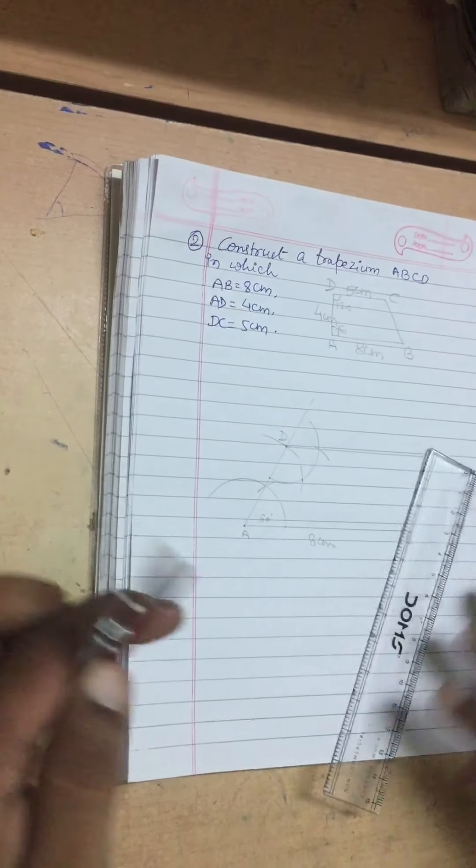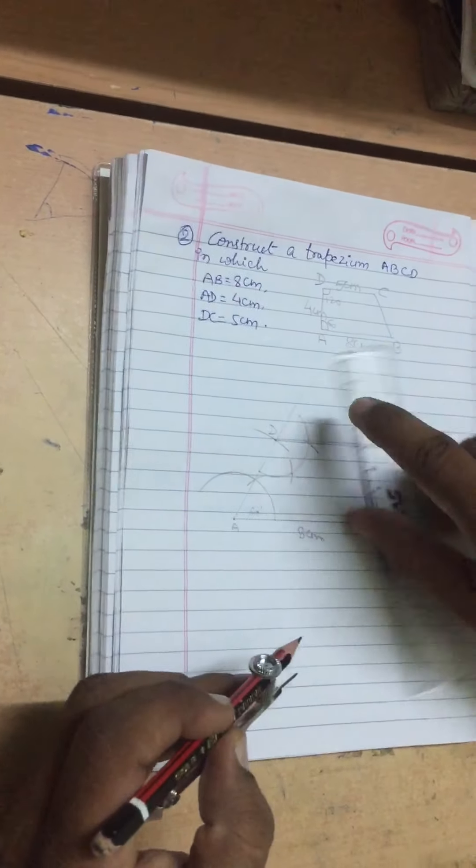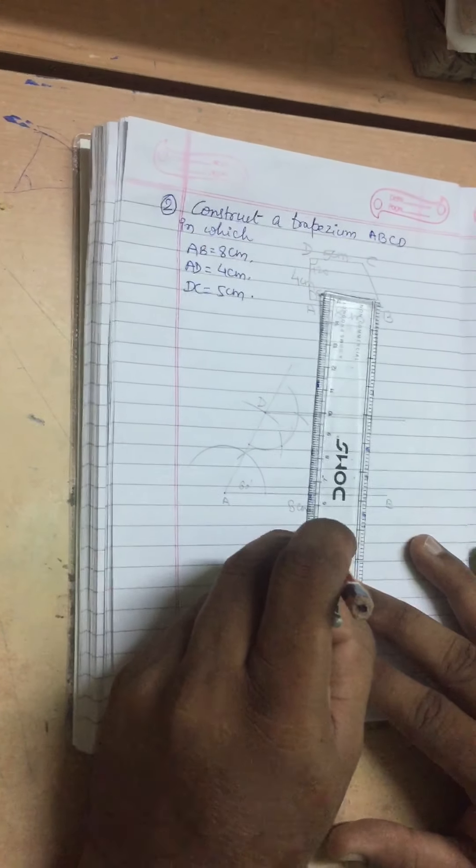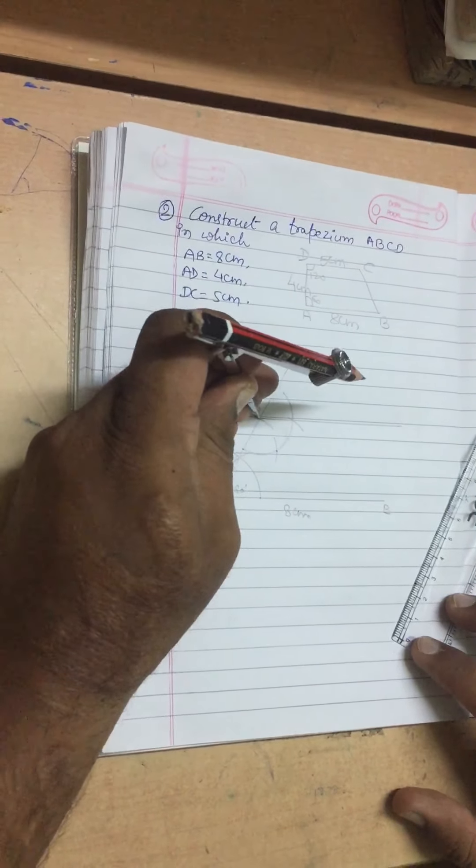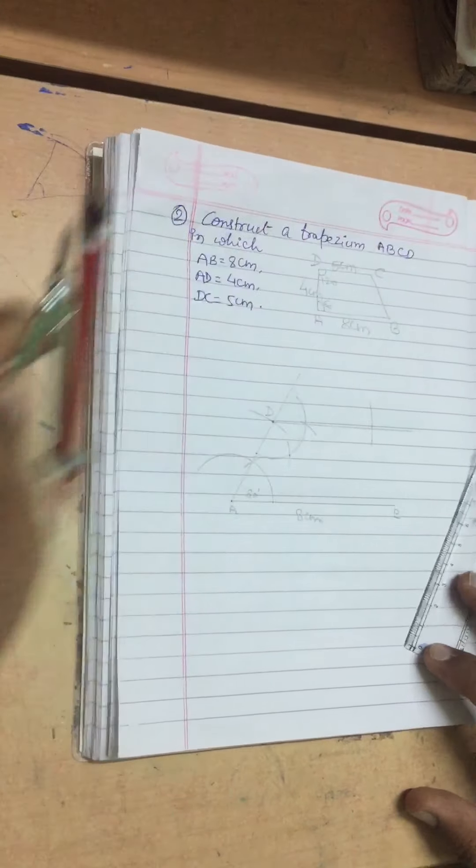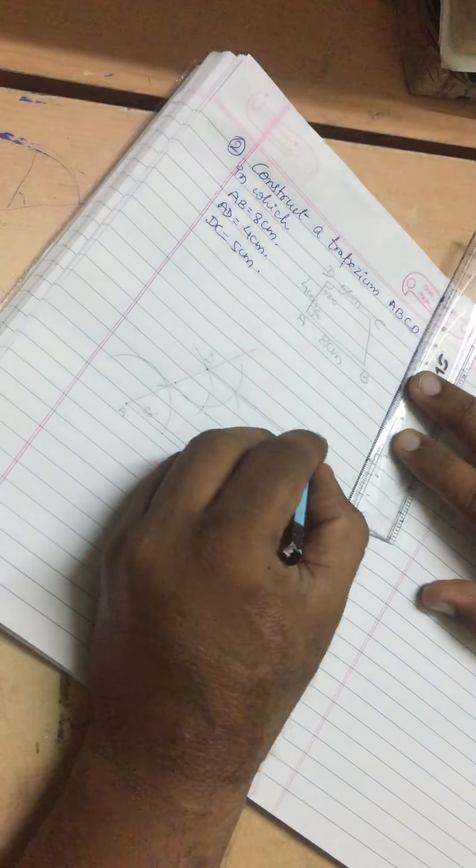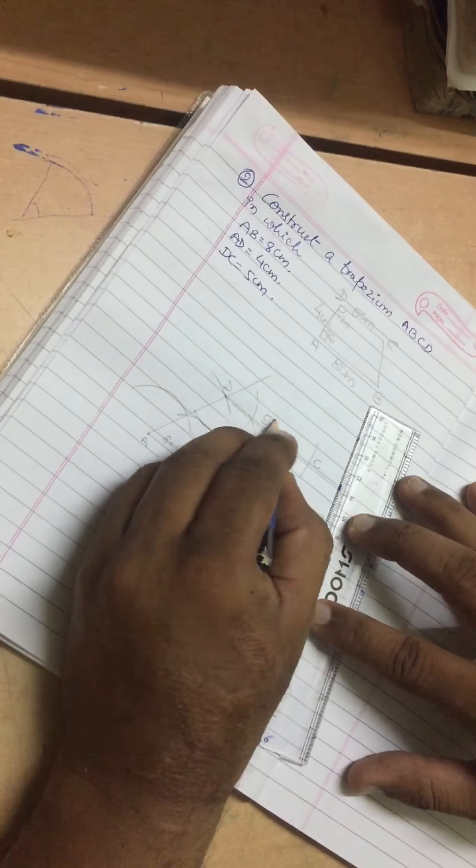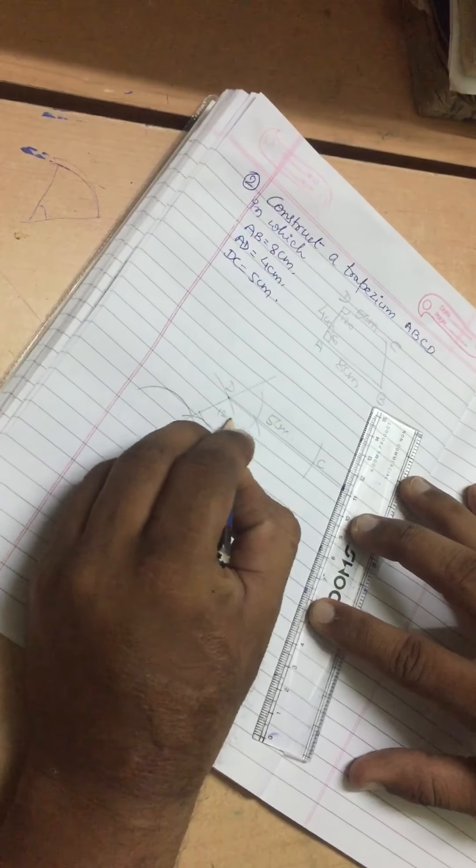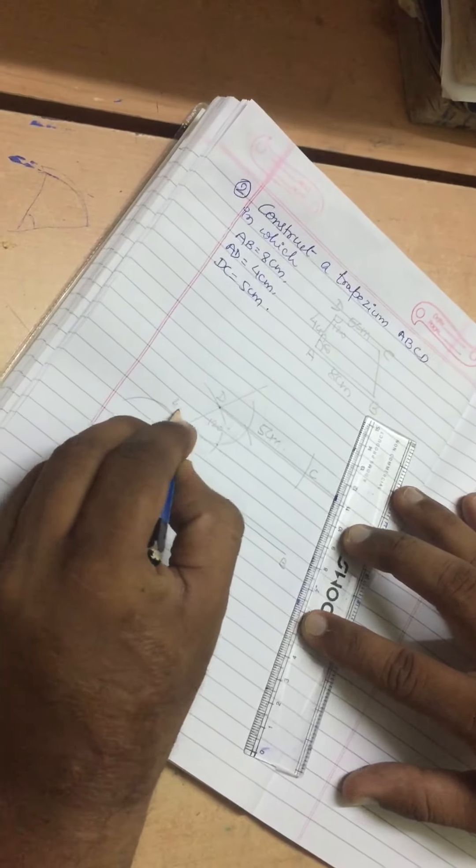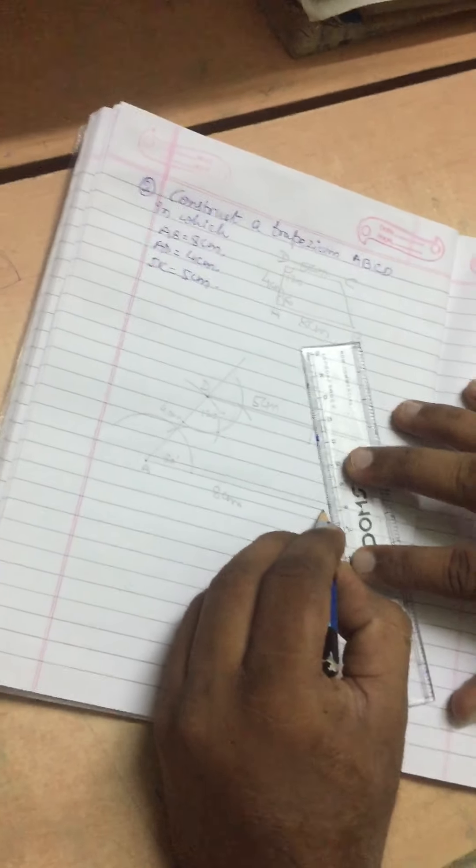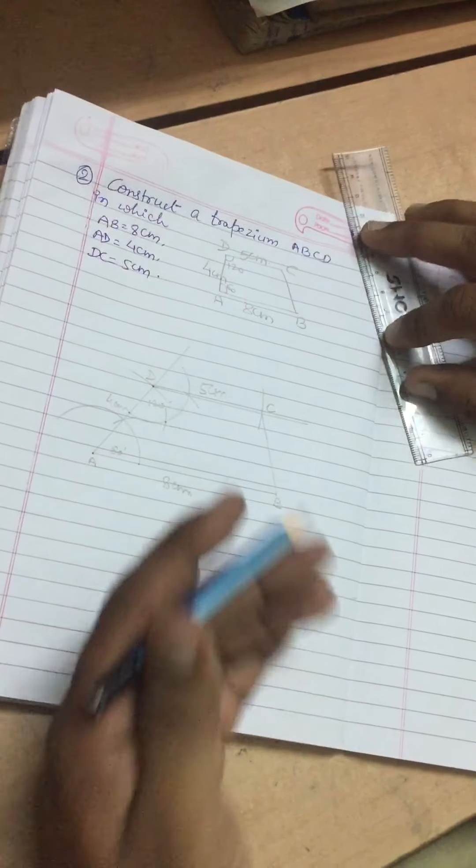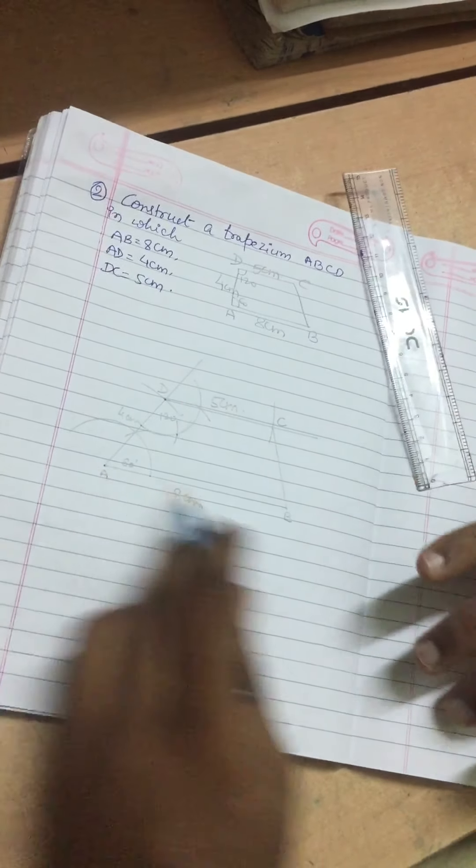I have been given DC as 5 centimeter. I am going to open the compass to 5 centimeter and cut an arc. This is point C. Now this is 5 centimeter, 120 degrees, 4 centimeter. I am going to join BC. Here is our required trapezium ABCD.